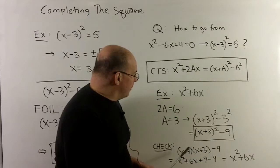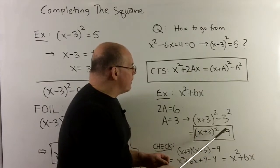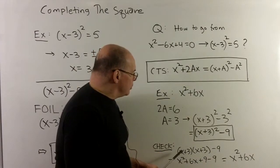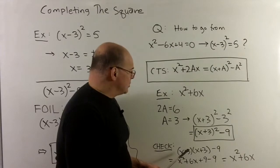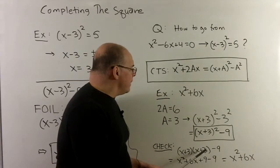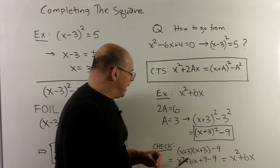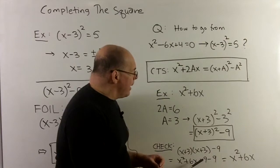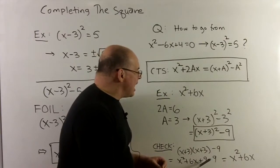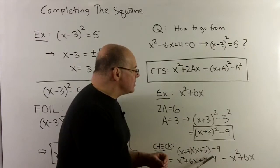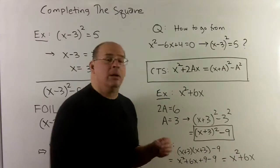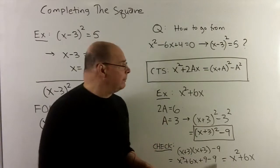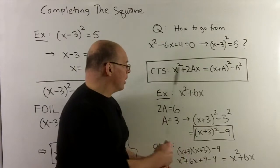If I take x plus 3 squared minus 9 and expand: x plus 3 times x plus 3, we FOIL to get x squared plus 6x plus 9. Minus 9 gets rid of the constant term, and we have x squared plus 6x — which is what we started with.